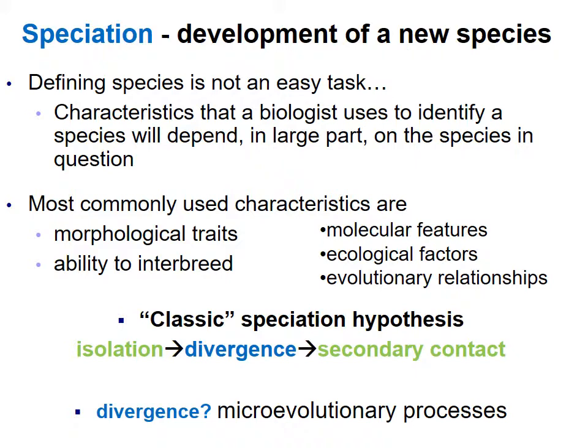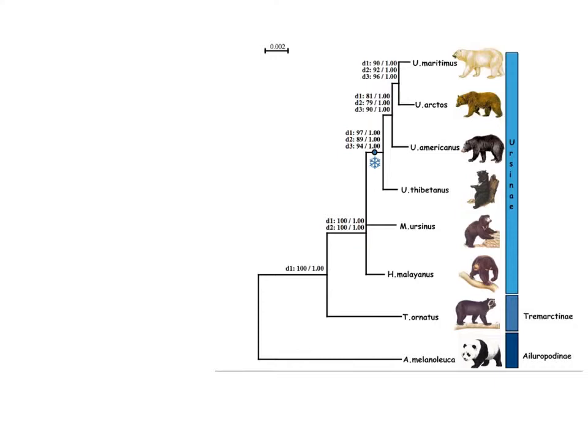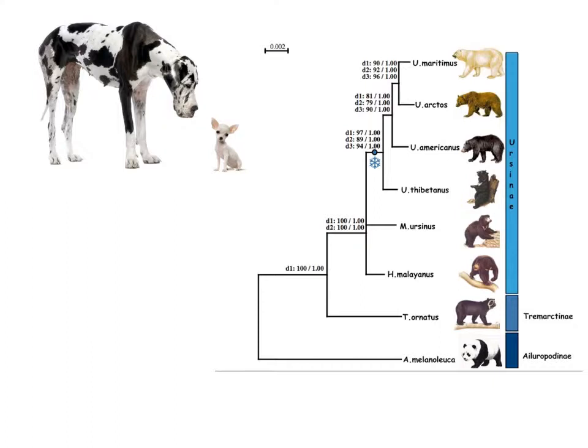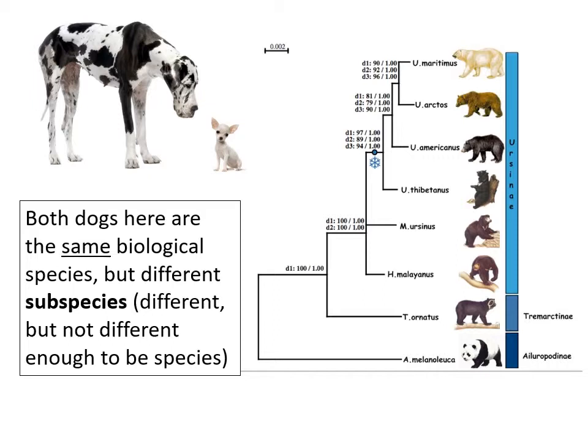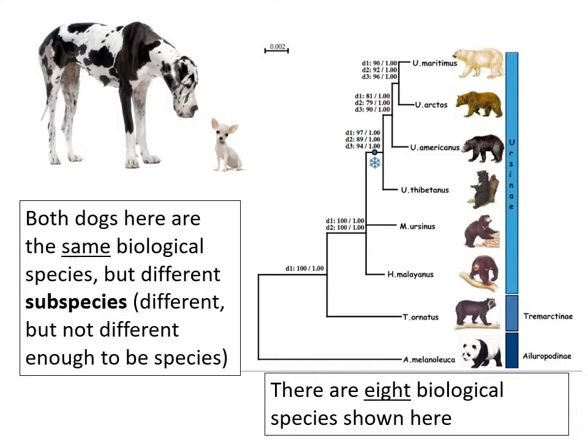At first glance you might see a whole lot of bears, but looking at the other picture those are dogs. That Great Dane and that Chihuahua look pretty different, but both are the same biological species. On the bear side, there are actually eight biological species shown. So defining what a species is and isn't is a tricky task.